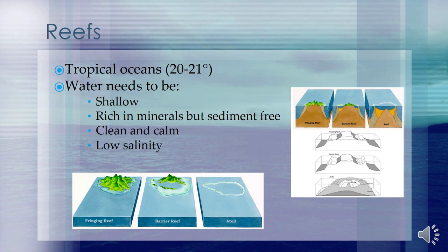Coral reefs are calcium carbonate structures made up of reef-building stony corals. Coral is limited to the depth where light can reach, so reefs develop in shallow water ranging to depths of maximum 60 metres. This dependence on light also means that the reefs are only found where the surrounding waters contain relatively small amounts of suspended material. Reef-building corals can only live in tropical seas where the temperature, salinity and clear water allow them to develop.